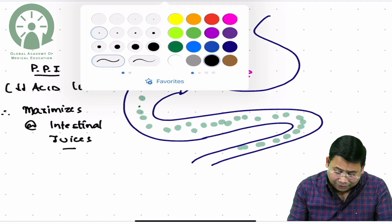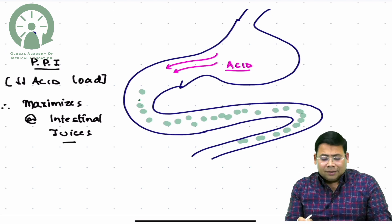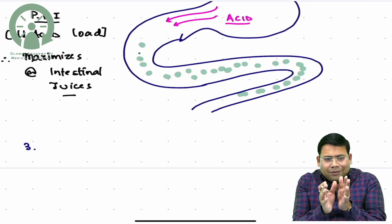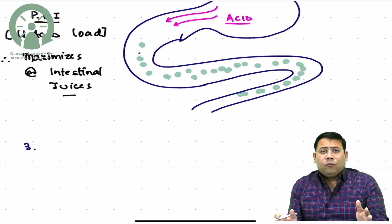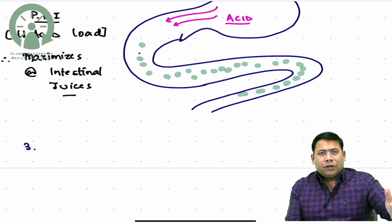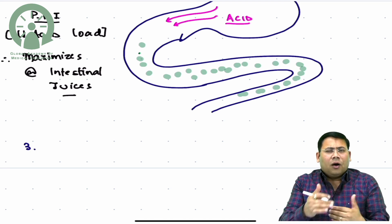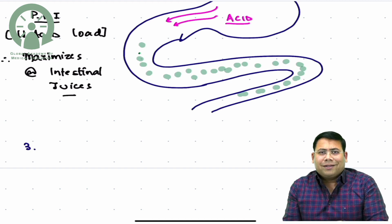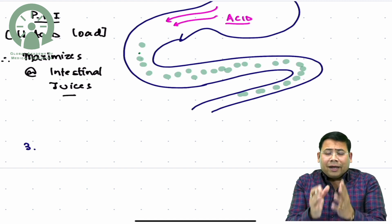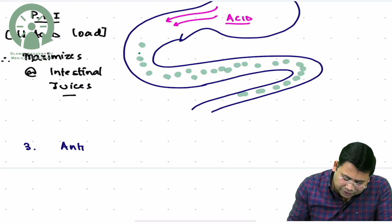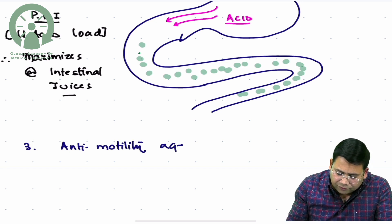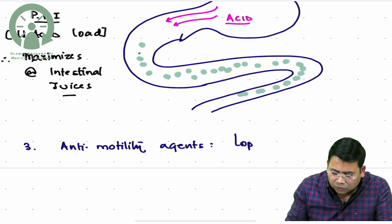The third measure is to increase the transit time of food in the bowel. If the bowel length is reduced but we increase the duration the food stays in the small intestine, we get more interaction between the intestine and food. That is why we have anti-motility agents. A very important agent is loperamide, a chloride channel blocker that decreases motility.